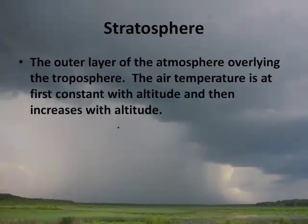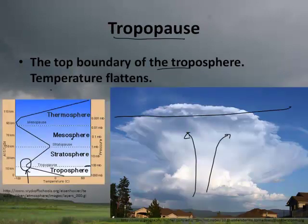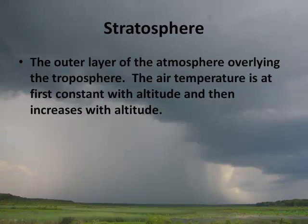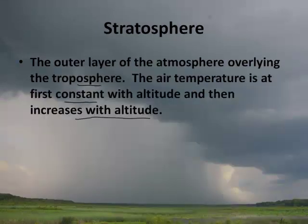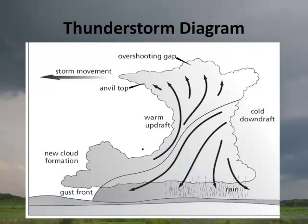The stratosphere is the next layer overlying the troposphere. The air temperature is at first constant with altitude and then increases with altitude — you can see this in the diagram where it stays the same and then the temperature rises.